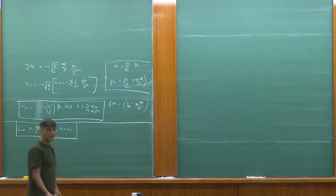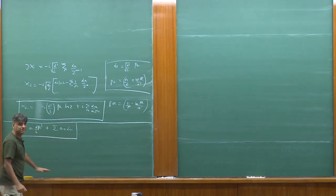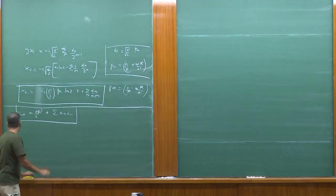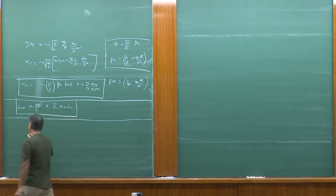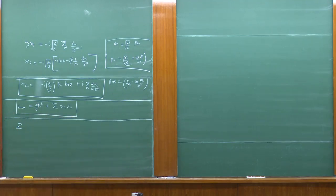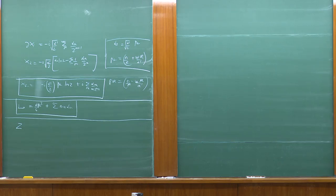The next thing we're going to do with this compact boson is to compute its partition function. So what we're going to do is to compute Z. When we solve CFT, we need the spectrum, the scaling dimension, and the three-point functions — the numerical coefficient.